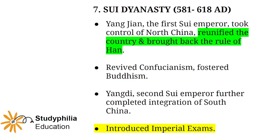The first Sui Emperor, Yang Jian, took control of North China, reunified the country, revived Confucianism, and fostered Buddhism. The second Sui Emperor, Yang Ti, further completed the integration of South China. An important point to note is that the introduction of imperial exams started during the Sui dynasty.